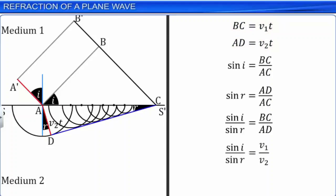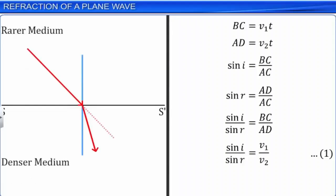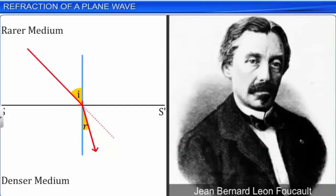We know that if light travels from a rarer medium to a denser medium, it bends towards the normal, and hence the angle of refraction R is less than the angle of incidence I. From equation 1, we can conclude that if R is less than I, then V2 must be less than V1. Thus, according to Huygens' wave theory, the speed of light in a denser medium is lesser than the speed of light in a rarer medium. This is in contradiction to the assumptions made by Newton in his corpuscular theory of light. In 1850, it was Foucault who first determined the speed of light experimentally and confirmed that the speed of light indeed is less in water than in air.